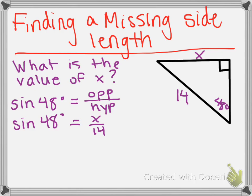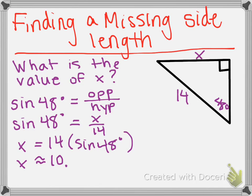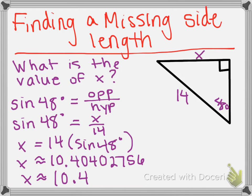Now we are going to use our algebra rules to solve this. To undo our division, we are going to multiply by 14 on each side. So we will get x equals 14 times the sine of 48 degrees. When we type that into our calculator, we will get that x is approximately 10.40402756. We want to round to the nearest tenth, so we will get 10.4. So x is about 10.4 when we use this strategy.